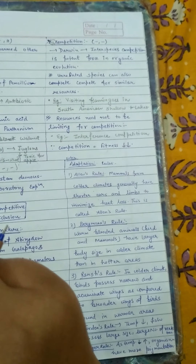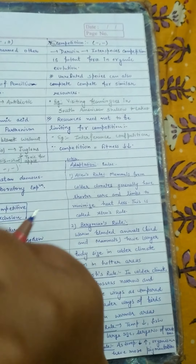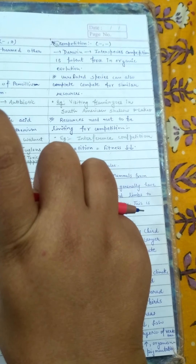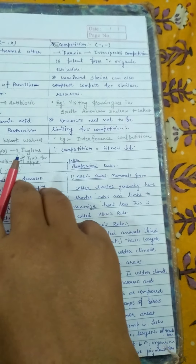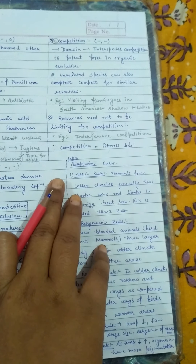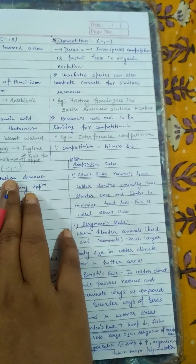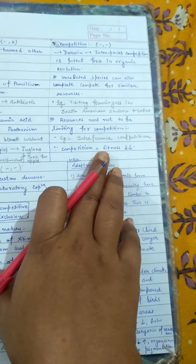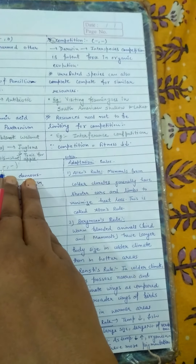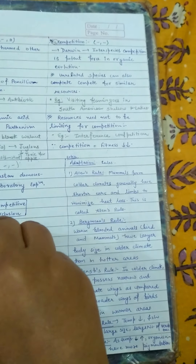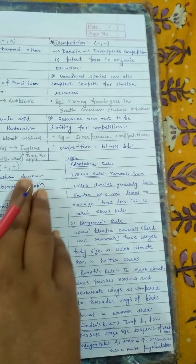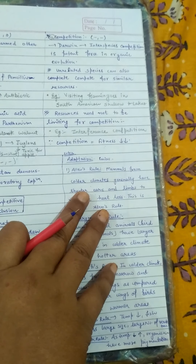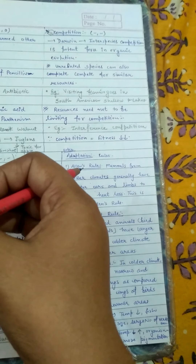We also note that resources in competition need not necessarily be limited. Even if we have a superior species and an inferior species in the same area, the presence of the superior species will reduce the feeding habits and fitness of the inferior species. The inferior species will be negatively affected even if resources are not explicitly limited or the same.